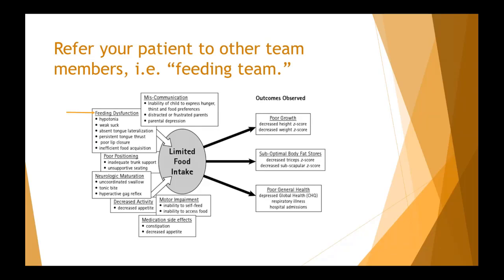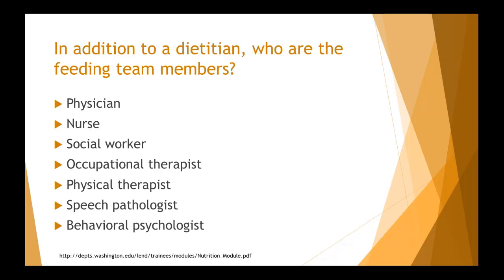A feeding team can address food aversion, oral aversion, feeding dysfunction, positioning, and neurologic maturation of oral abilities. In addition to the dietitian, the feeding team may include speech pathologists, physical therapists, and occupational therapists, who are the experts in this area — at least from experience at the University of Michigan.